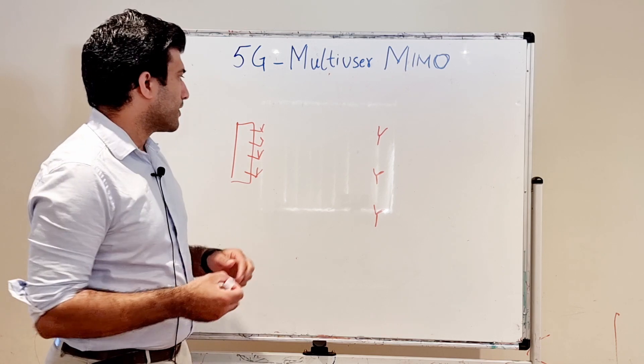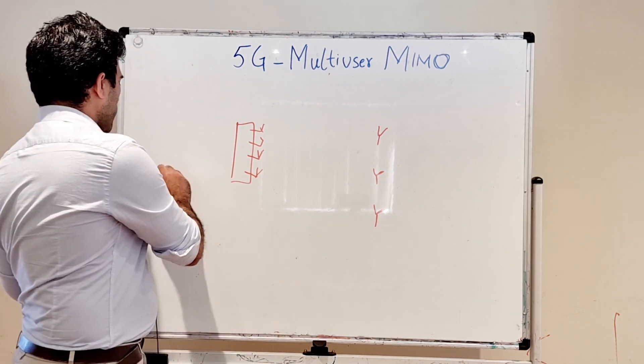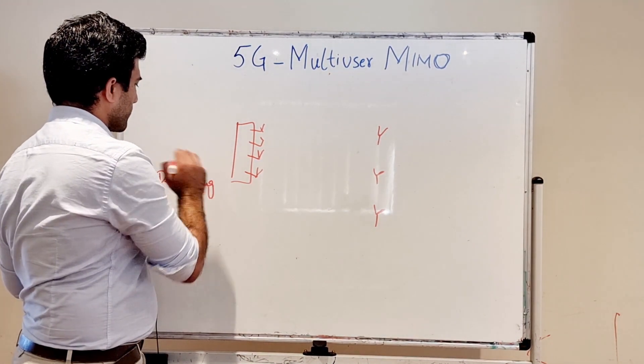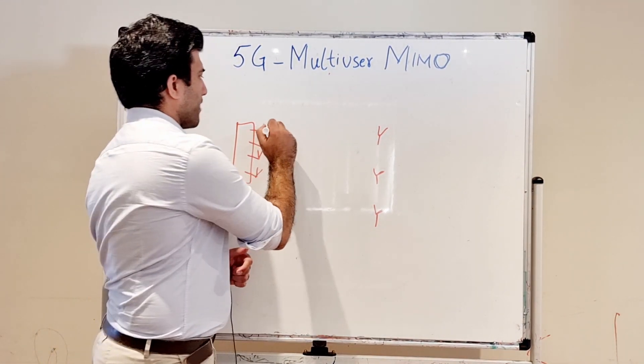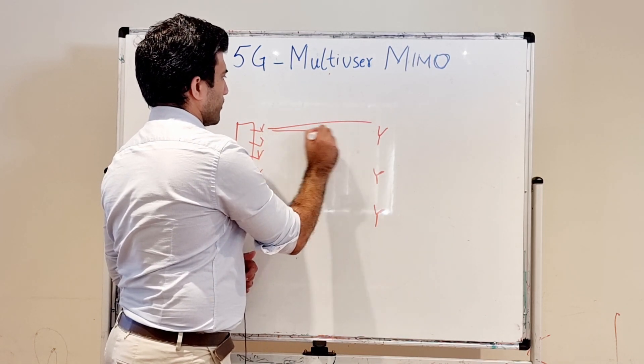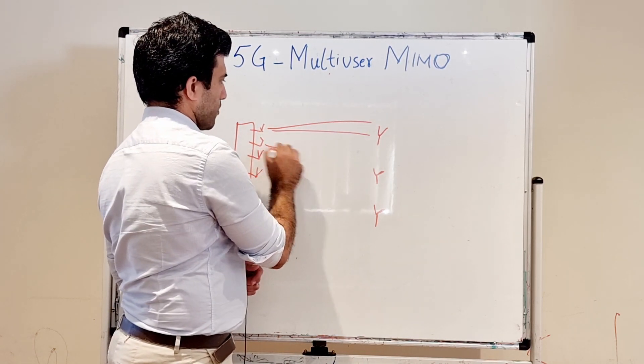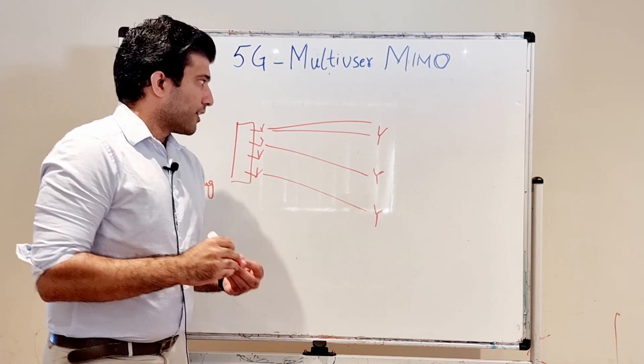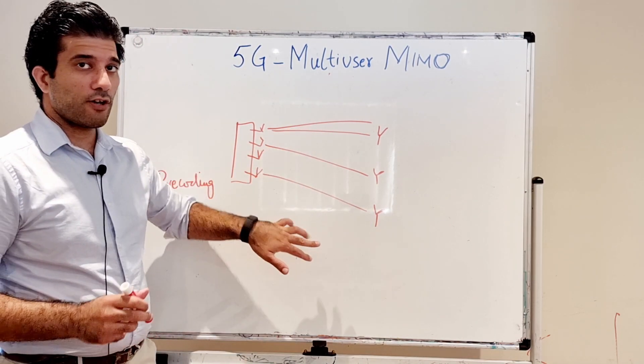You must have heard something called precoding. What happens is that we have two beams, for example, going towards this, one beam going towards this, and one beam going towards this. Now these beams—the concept of multiuser MIMO is that the same frequency resource...